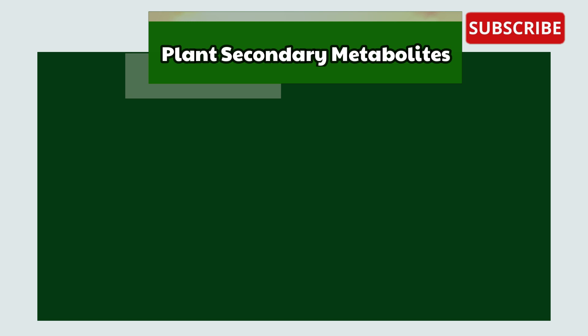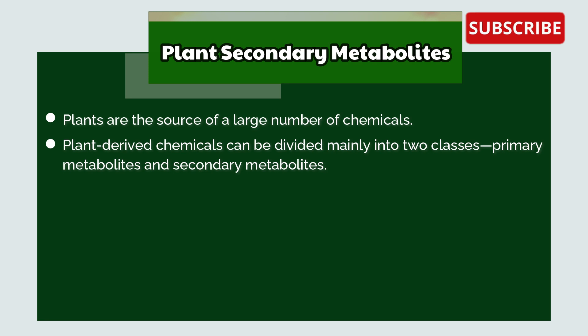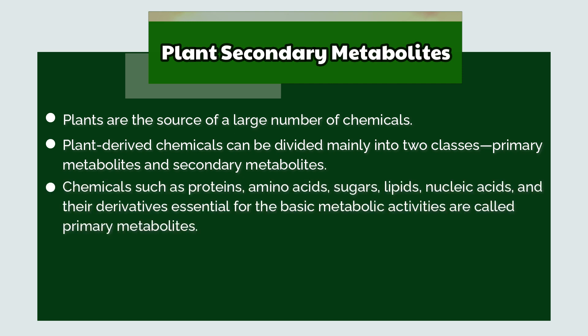Plant Secondary Metabolites: Plants are the source of a large number of chemicals. Plant-derived chemicals can be divided mainly into two classes — primary metabolites and secondary metabolites. Chemicals such as proteins, amino acids, sugars, lipids, nucleic acids and their derivatives, which are essential for basic metabolic activities, are called primary metabolites.